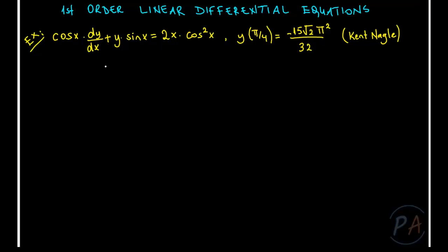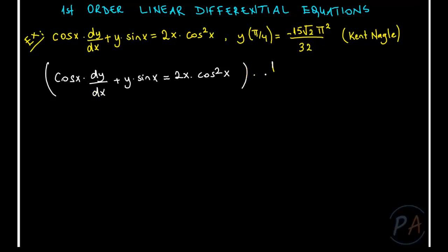Let's start by rearranging the equation to the known form of a first order linear differential equation. Starting with cosine(x)·dy/dx + y·sin(x) = 2x·cos²(x), and multiplying both sides by 1/cosine(x), we obtain dy/dx + tan(x)·y = 2x·cos(x).